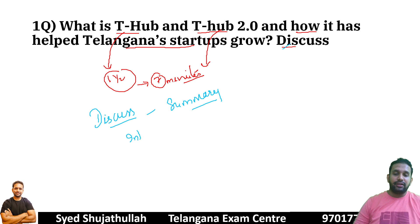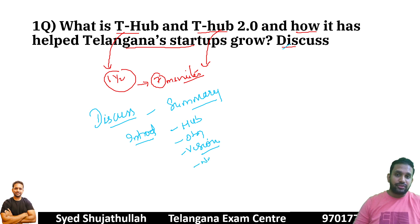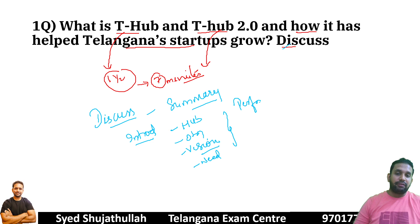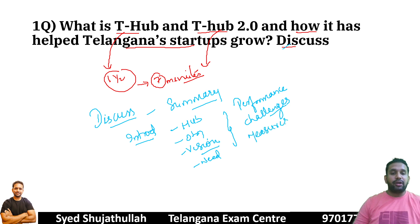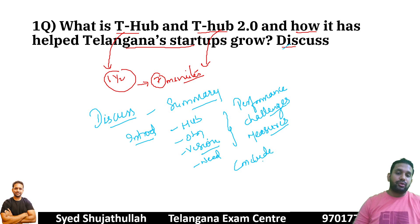For a 'discuss' question, in the introduction you discuss what T-Hub is, its objective, vision, when it started, and the need for it. Then you talk about the performance of T-Hub over time, the challenges it faces, and the measures taken by the government to promote T-Hub and the startup ecosystem. At the end, you conclude with a forward-looking positive aspect.